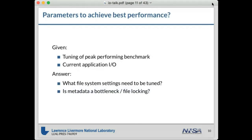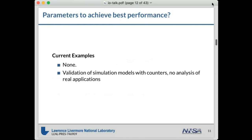The next question is: which parameters can I tweak to achieve better performance? Assuming the IO has to be done, what's the best way to do it? Hopefully your system admin has tested the system and knows the peak performance. Once you understand the application's IO pattern, you can go back and ask: what file system settings can we tune? Specifically in the case of Lustre, can we tune the striping - turn the stripe count up or down? Is there a network bottleneck, metadata bottleneck, or file locking issue?